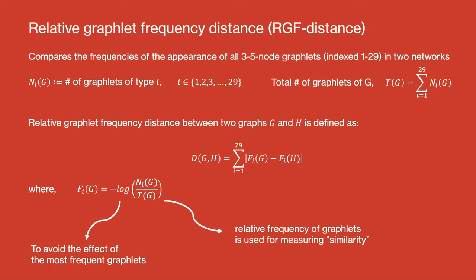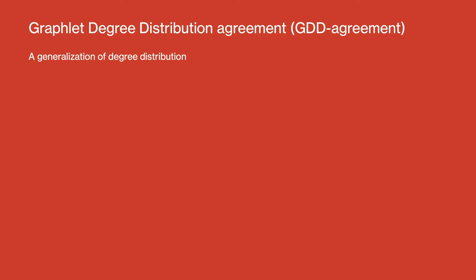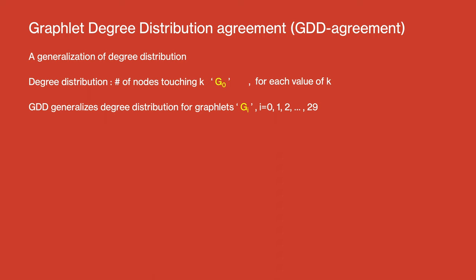Another tool we have is graphlet degree distribution agreement. This is a generalization of degree distribution. Normally, a degree distribution is number of nodes touching k edges for each value of k. Edges are actually G_0. GDD generalizes this degree distribution for all other graphlets from G_i, i equals 0 to 29. For GDD, it's defined as number of nodes touching k graphlets G_i in a particular way. We say particular way here because what we mean by it is the orbits.